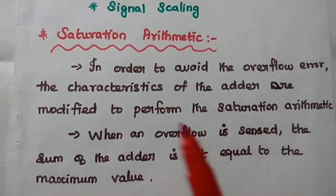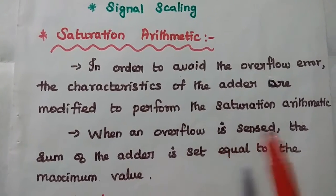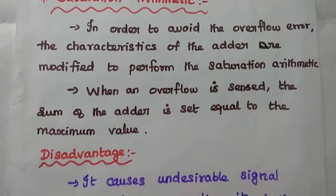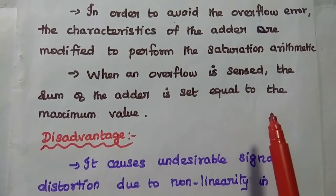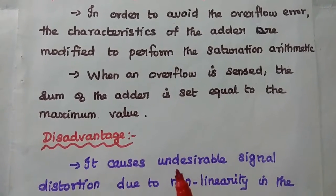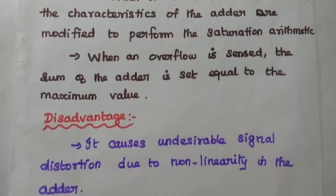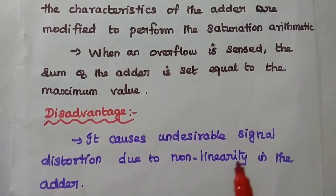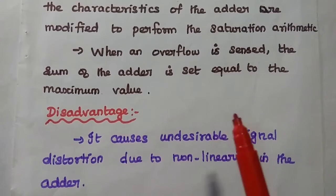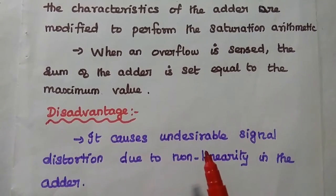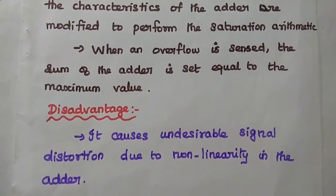In the saturation arithmetic method, to avoid overflow error, the characteristics of the adder are modified to perform saturation arithmetic. When an overflow is sensed, the sum of the adder is automatically set to the maximum value of the system by default. The major disadvantage is that it causes undesirable signal distortion due to non-linearity in the adder circuit, because we are assuming the value to be the maximum. This non-linearity is the major disadvantage of the saturation arithmetic method.